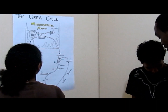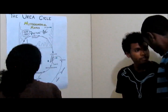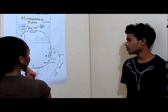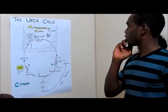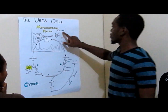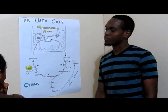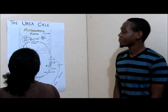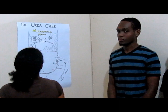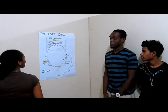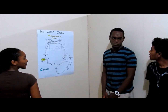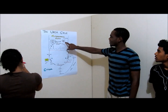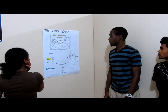How many high energy phosphates are used in one turn to make one molecule of urea? David? Two in the mitochondrial matrix and two in the cytosol. Okay, very good. What is the main regulatory enzyme for this entire cycle? Carbamoyl phosphate synthetase 1. Yes, very good.